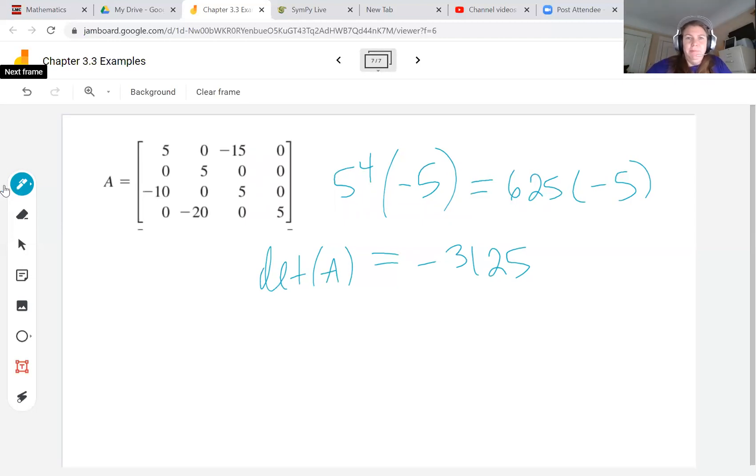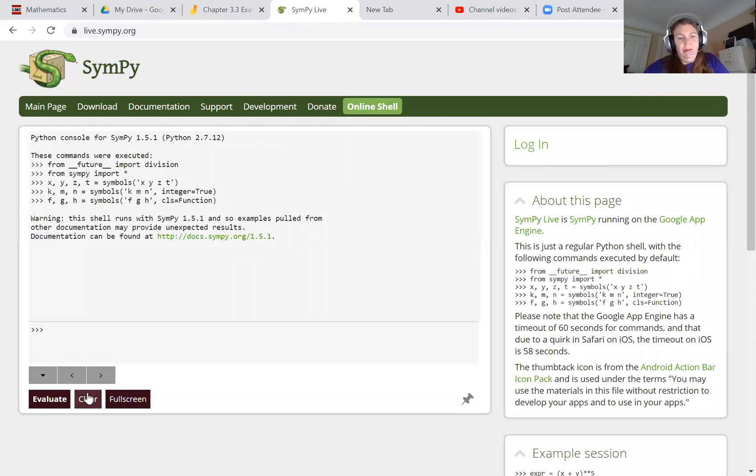I'll clear out my previous matrices just by clicking clear. I'm going to say A equals a matrix. My first row was 5, 0, negative 15, 0. Then 0, 5, 0, 0. Then I had negative 10, 0, 5, 0. And my last row was 0, negative 20, 0, 5.